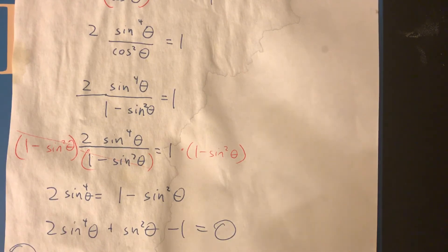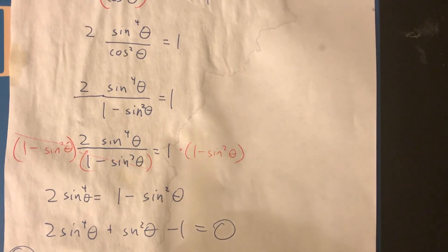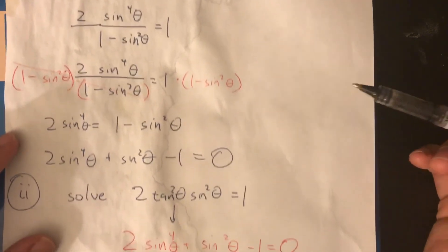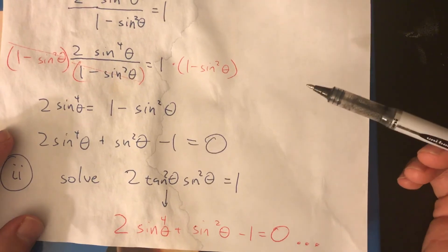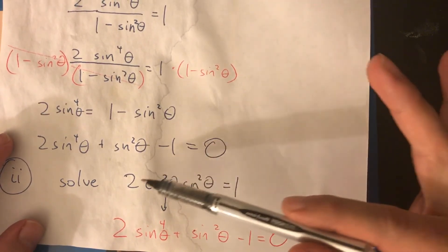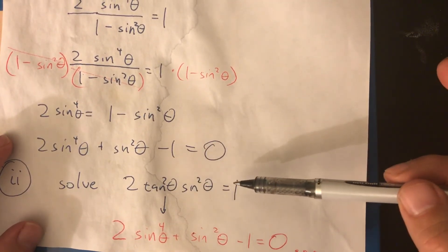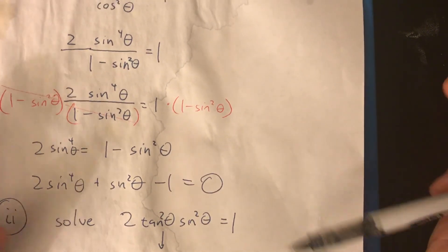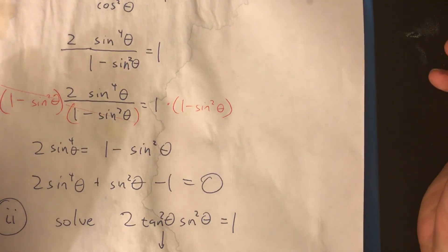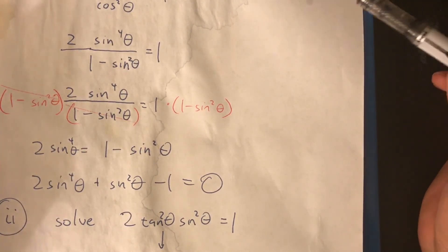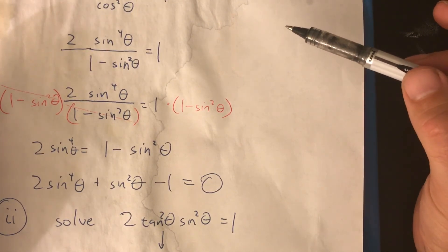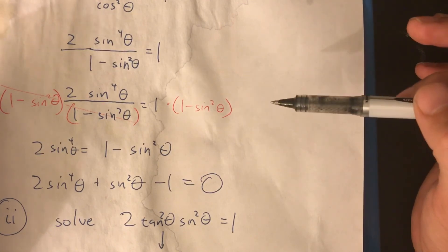So, on this actual ACE exam, this was just part one of the question. Part two asked us to solve. It said, hey, you know this equation that you started with? Solve it. Now, they like to do this trick on actual ACE exams, and I wanted to mention it right here. In that, they often ask you to do a trig proof in part one, and then to solve a trig equation in part two.